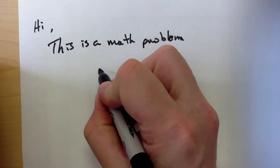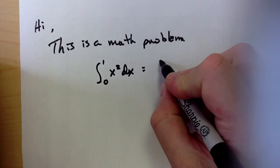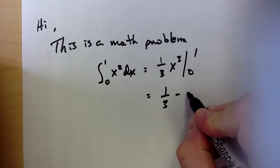The integral from zero to one of x squared dx, and that would be what? One-third x cubed, which is one-third minus zero.